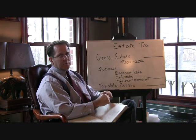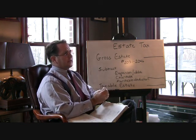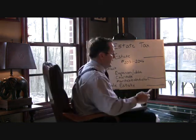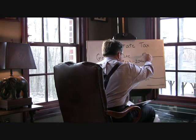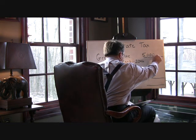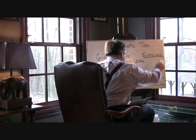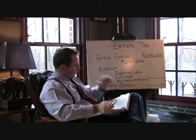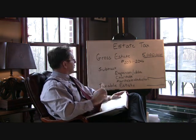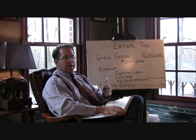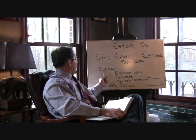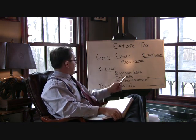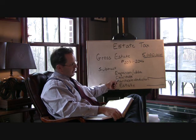Once we calculate the gross estate — let's say after computing Neal's estate, he passes away in 2008 and he's got a $5 million estate — we now know what the gross estate is. It's a rather simplistic formula. We're then going to subtract expenses and debts, also any taxes, which is governed under section 2053 of the Code.